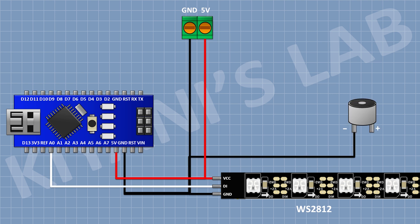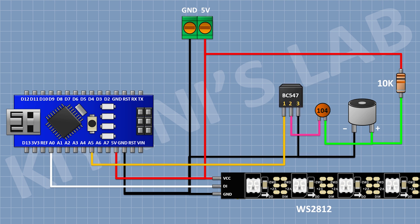Now connect the microphone and connect its ground pin to ground. Now connect a 10k resistor — connect one pin to the positive pin of the microphone and the other pin to the 5V pin of Arduino. Now connect a 100 nanofarad capacitor and connect one pin to the positive pin of the microphone.